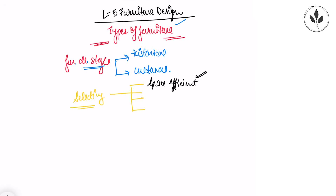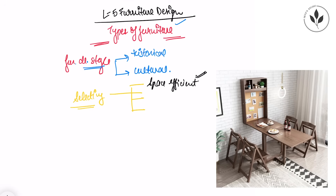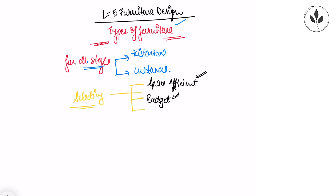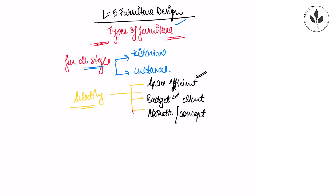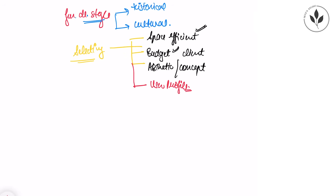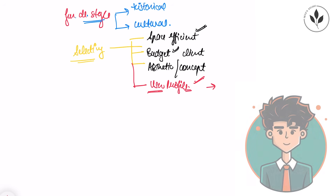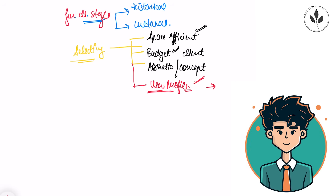While selecting furniture we should always keep in mind space efficiency — according to the availability of space, making the space more efficient, we select the type of furniture that suits it most. Then there is the budget, according to the budget of the client. Then according to aesthetics or the concept of the architect or designer. And last is the user profile — whether you are working for a permanent resident, a renter, a corporate building, or residential use. According to the user profile, the type of furniture will also depend.